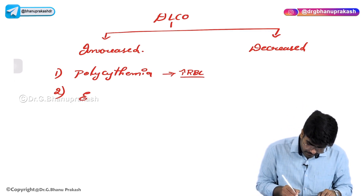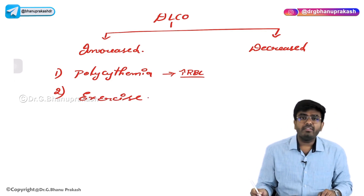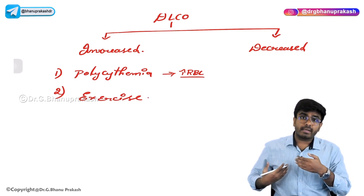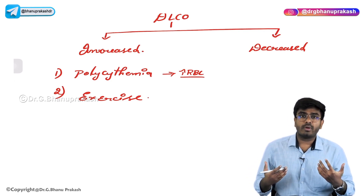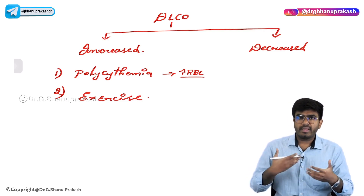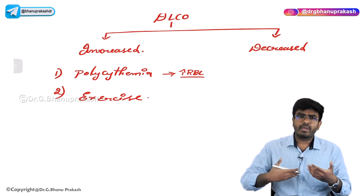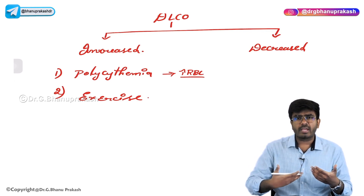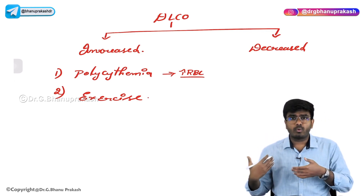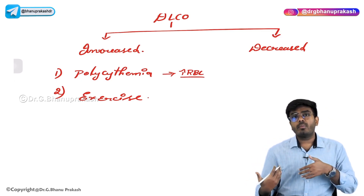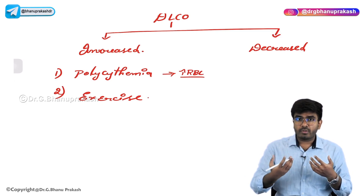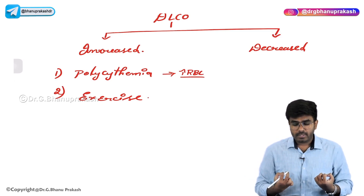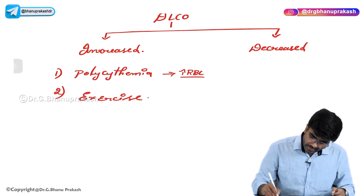The second condition where DLCO is increased is exercise. During exercise, the amount of blood going to the lungs for oxygenation is more. There is hyperdynamic circulation - the heart beats more, cardiac output increases, the amount of blood going to the lungs increases. So all the carbon monoxide given is easily taken up, and DLCO increases.